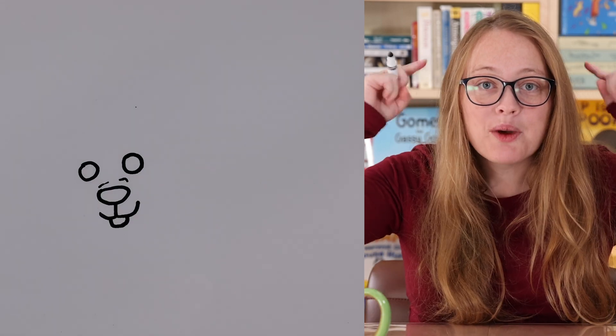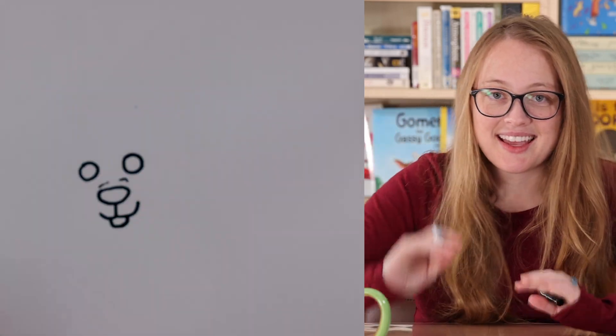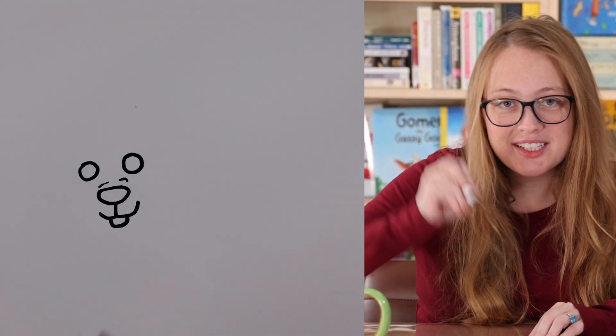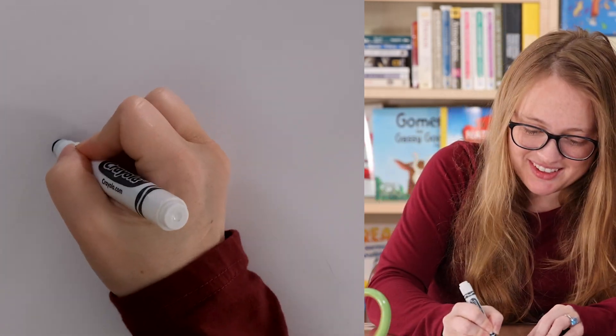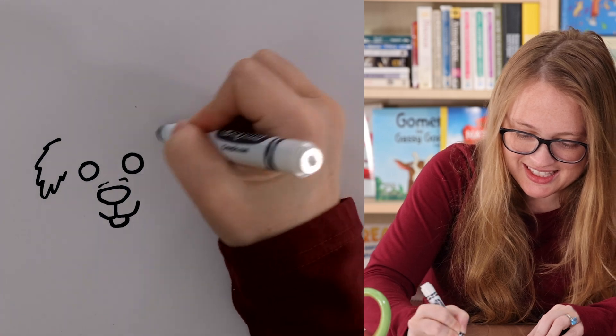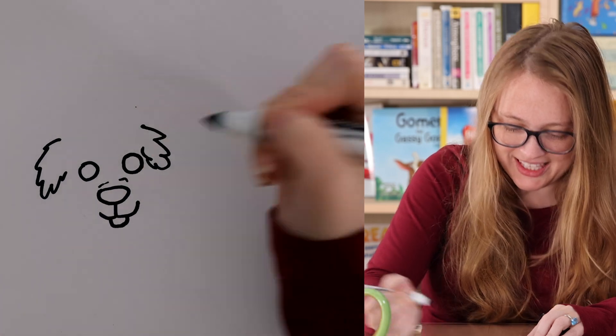After that, I like to think, where will the ears be? And I'm going to kind of scribble the ears in, because I want my dog to look fluffy. So, I'm going to do it like this, and then another scribble like that.